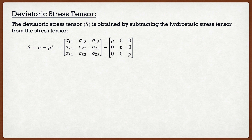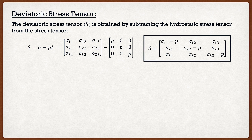All we do is take our Cauchy stress tensor, subtract our hydrostatic stress tensor, and we get the deviatoric stress tensor — which is simply our Cauchy stress tensor with the hydrostatic stress subtracted from all of the diagonal components. This tensor has a very unique property: the first invariant of the deviatoric stress tensor, which is its trace, is actually equal to zero.